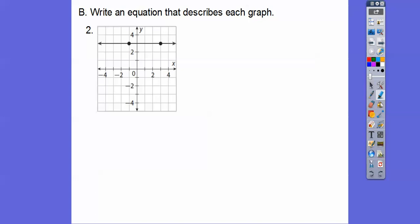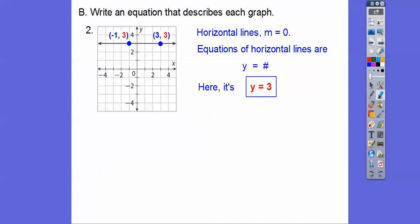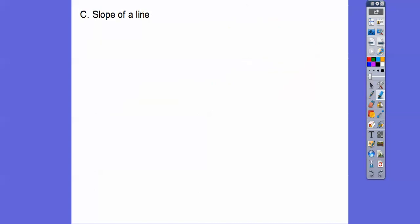This is a horizontal line. If it's a horizontal line, it's always y equals a number. So the slope is 0. So here, it's y equals 3, your y-coordinates of your points right there, y equals 3.